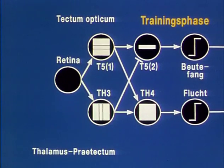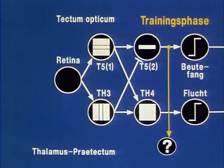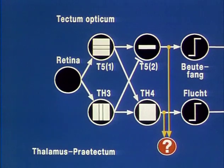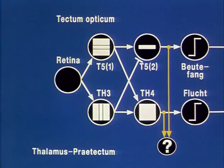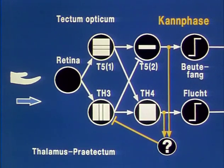Are there in the toad's brain neuronal systems that are sensitised by the combination of prey and predator information? Then, in the learning phase, by inhibiting Th3, the inhibition of Th5-2 could be cancelled and thus prey catching be facilitated. In the performance phase, the hand alone should elicit prey capture.